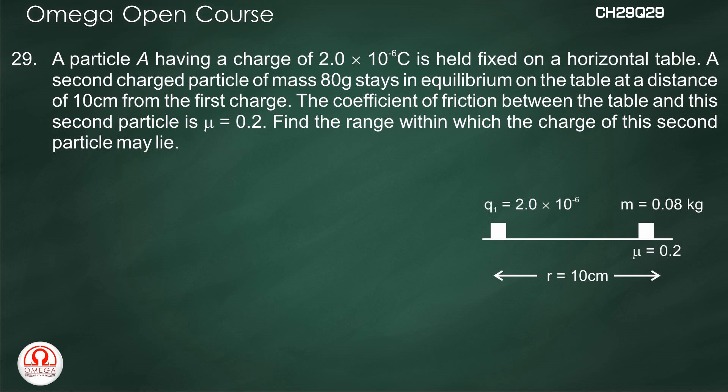The coefficient of friction between the table and the second particle is μ = 0.2. Find the range within which the charge of the second particle may lie.